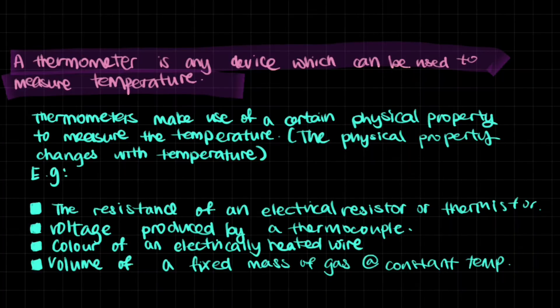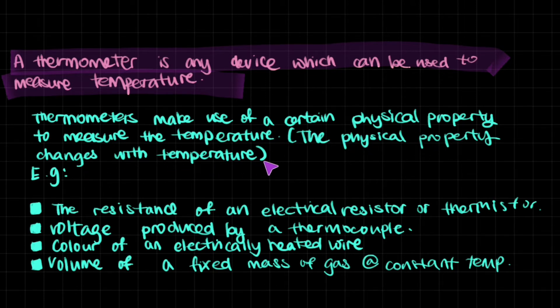To start, let's have the definition of a thermometer. A thermometer is any device which can be used to measure temperature. Thermometers make use of a certain physical property to measure the temperature, and that physical property changes with temperature. So this is basically how thermometers tend to work.